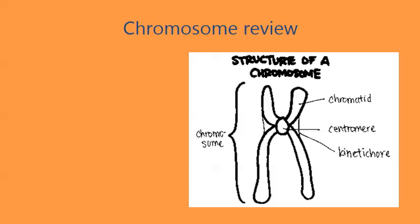Let's review what a chromosome is. This is a chromosome of a eukaryote — it's X-shaped. If it were a prokaryote, it would be circular in form. We have two sister chromatids: if you were to cut the chromosome in half at the centromere, each half would be a chromatid. This whole structure is called a chromosome. The little button-looking thing in the middle is called a centromere.